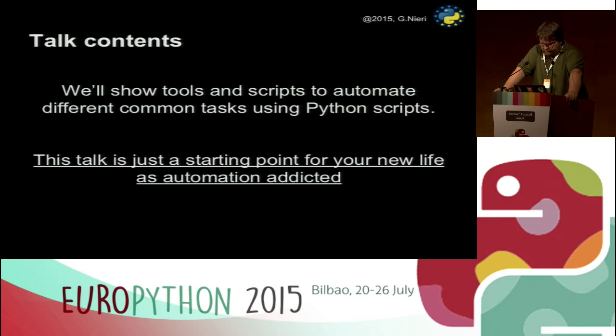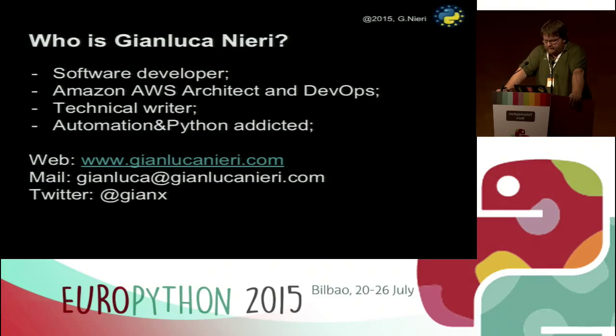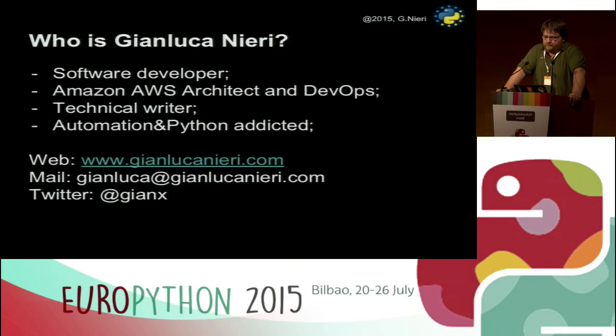The presentation is divided into two parts: the first is pure slideware where I give you some concepts about software automation, and the second part features quick demos of some examples I found pretty interesting. Let me introduce myself — my name is Gelo Canieri, I'm an Italian developer, technical writer, solutions architect. I'm a Python lover, and because I'm also a lazy guy, I decided to show you exactly how to use Python for automating repetitive and not-so-interesting tasks.